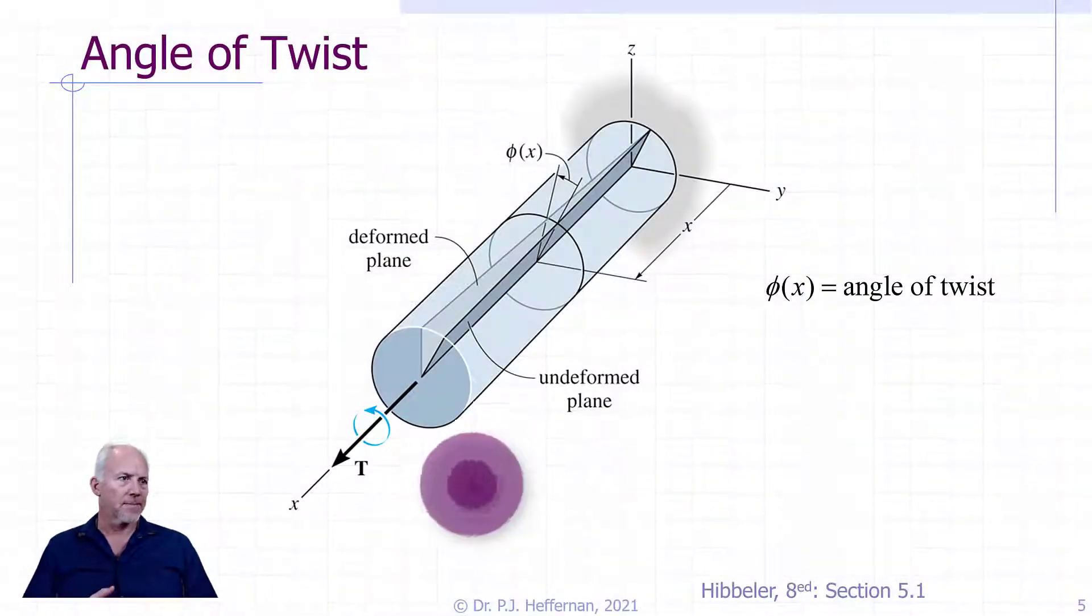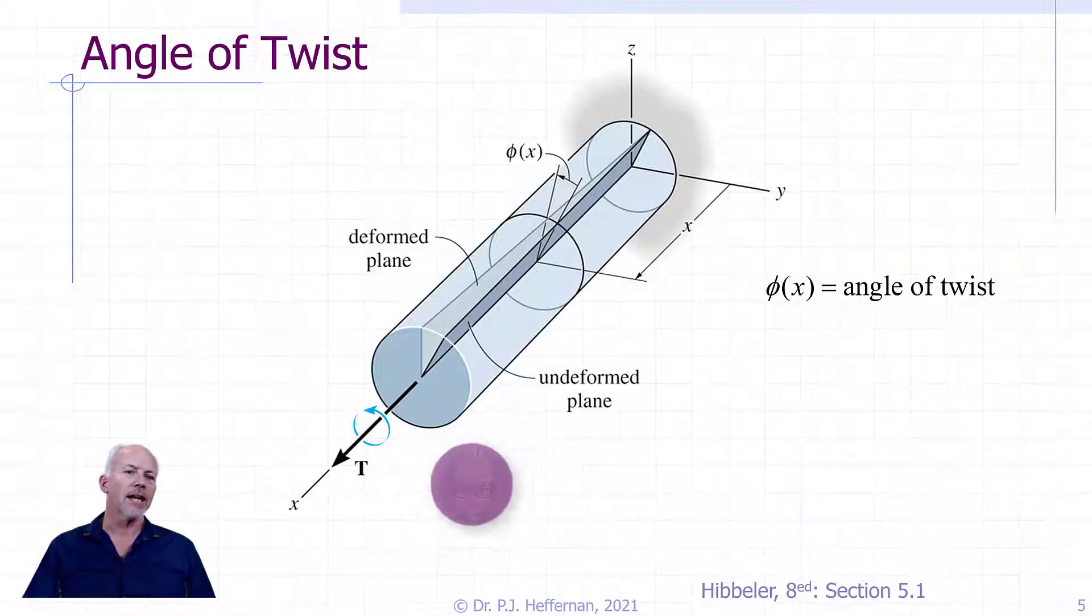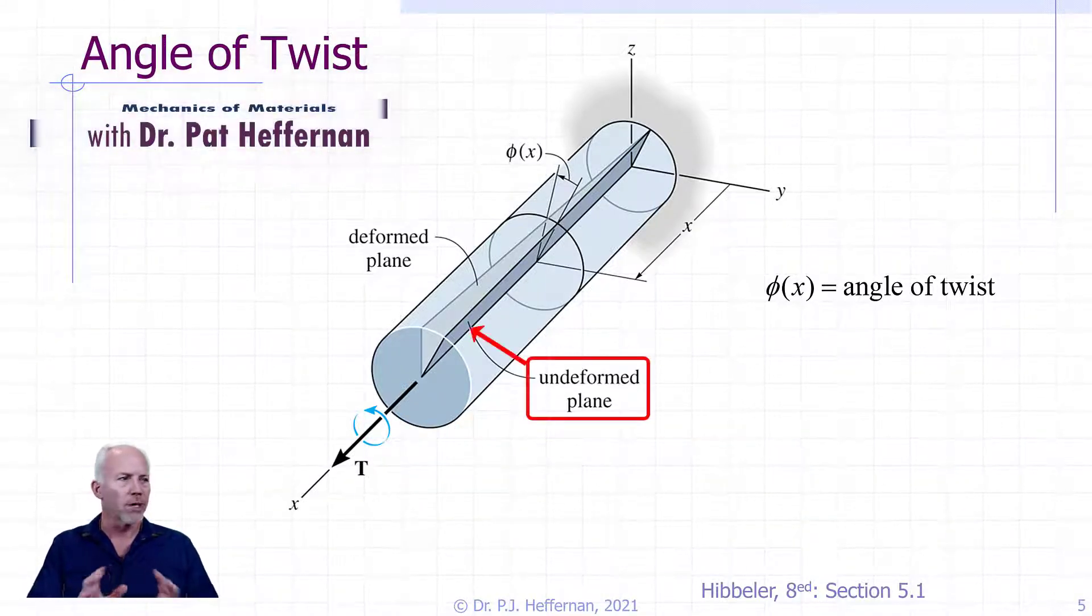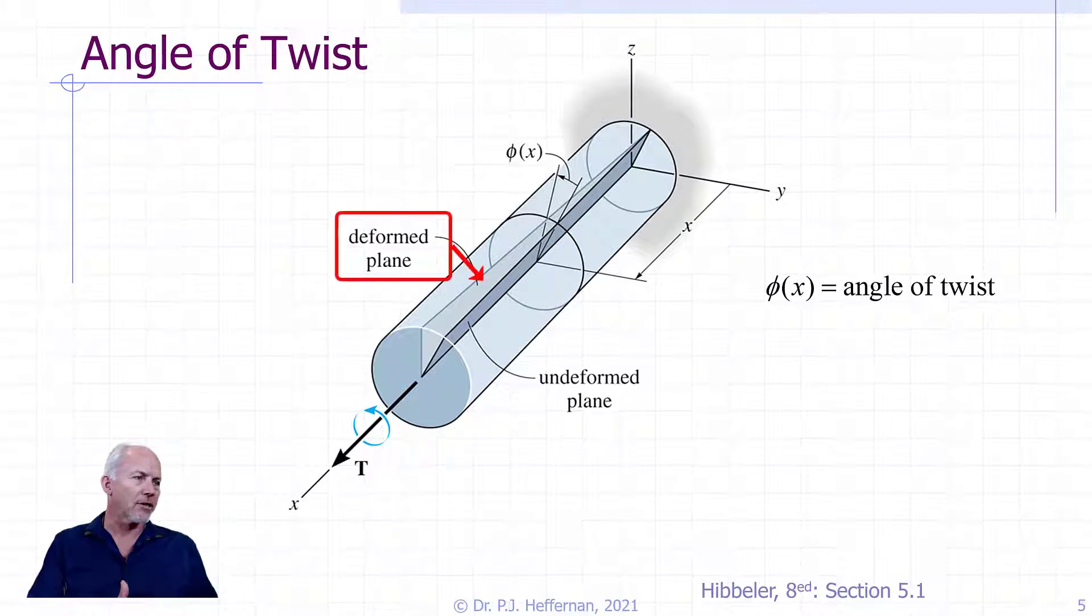So the angle of twist. If the shaft is fixed at one end and subject to a constant torque across its length, a previously undeformed plane, which is that kind of dark greenish, bluish plane shown there, will distort, as shown, into the lighter gray plane.